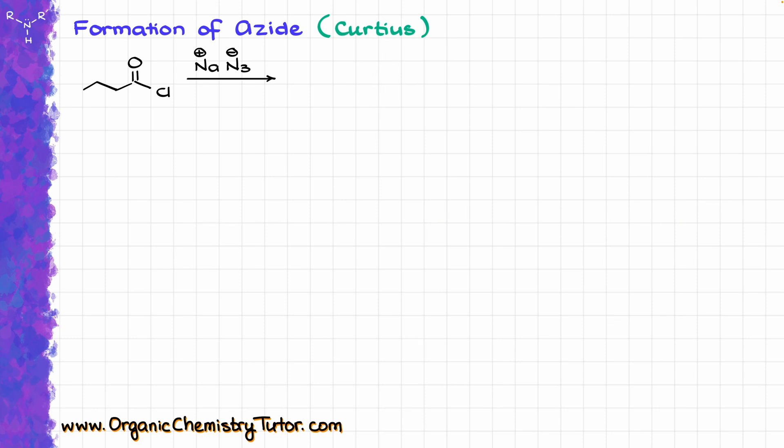Before we go to the hydrolysis step, let's look at how this reaction goes via the Curtius pathway. Let me emphasize one more time that this is a Curtius rearrangement — Theodor Curtius was a German chemist, and his last name has nothing to do with courtesy. As a token of respect, I'll encourage you to pronounce his name more or less appropriately.